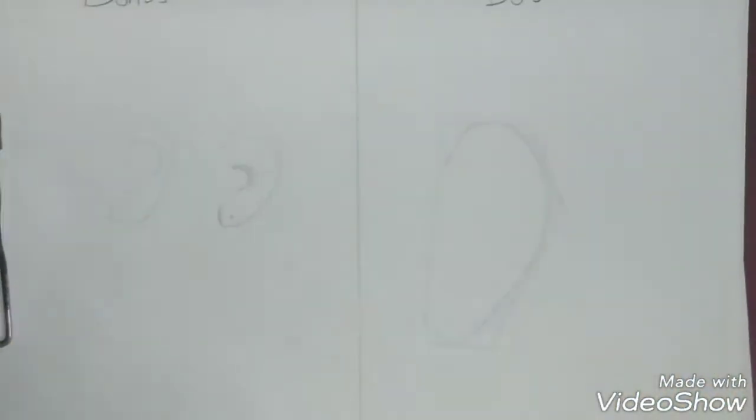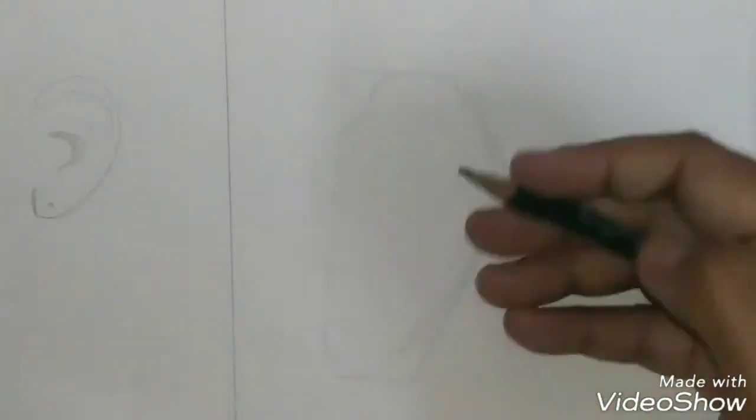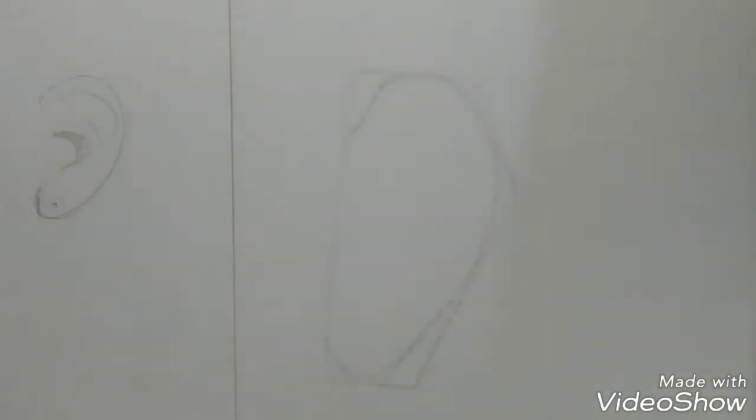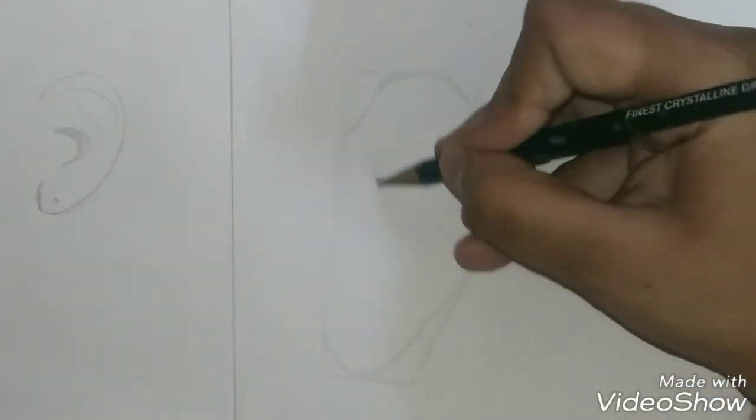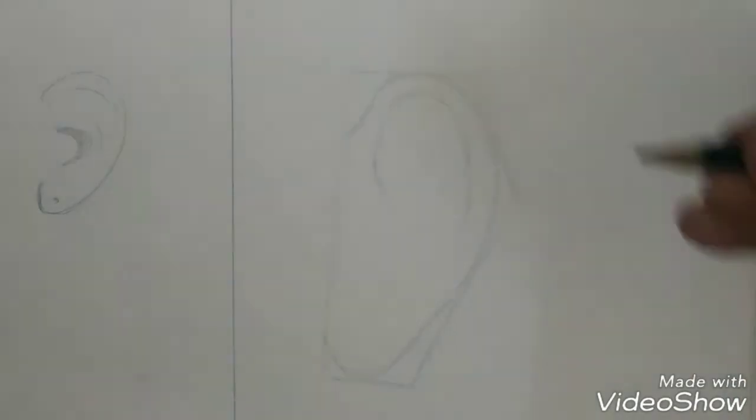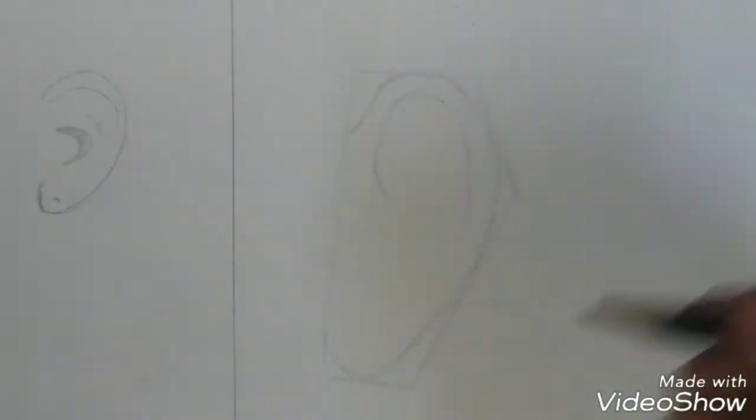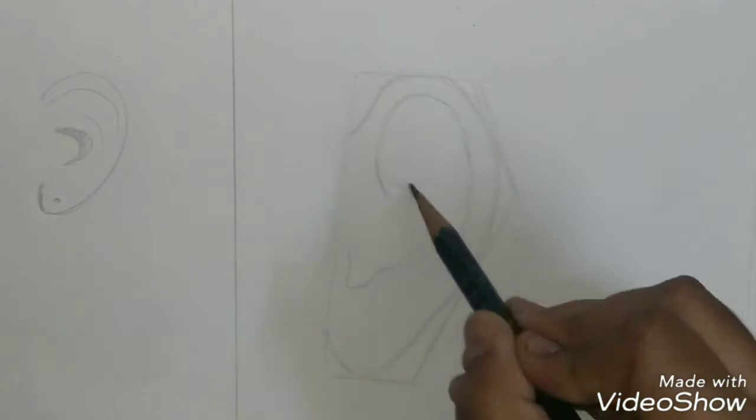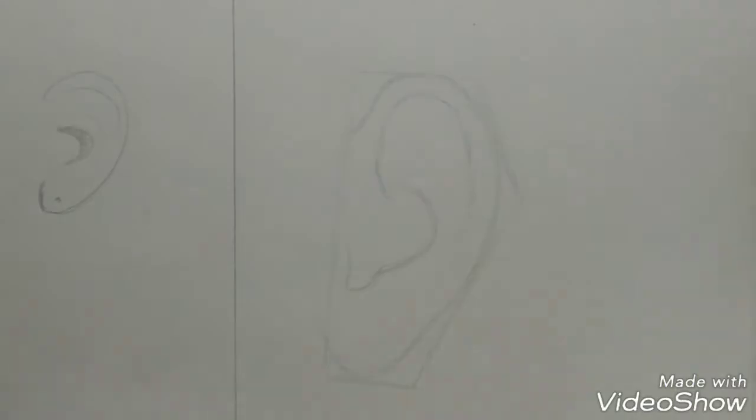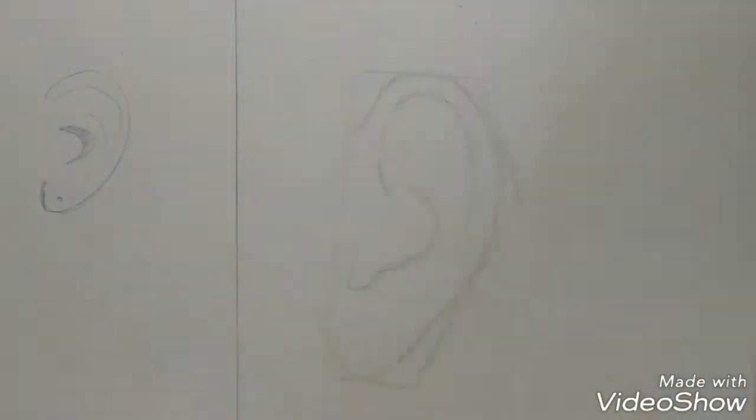Once you're done drawing the outline, draw an inverted U on the top part of the ear, just like I'm doing. You can keep this line as jagged and as small as you want. Keep this part slightly curved inwards. Then draw a mirrored C and then a crooked U at the bottom.